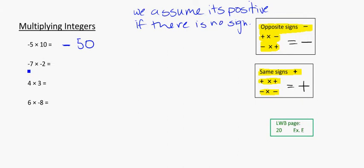In the next example, I'm thinking here, as I look at it, that I've got a negative times a negative. Negative times a negative, those are both the same sign, so I'm going to get a positive. And it's going to be 7 times 2, which is 14.